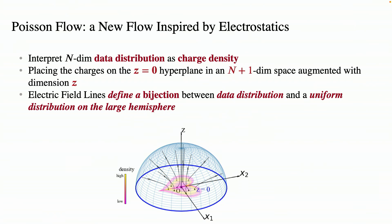So the second model, the Poisson flow model, takes the idea of electrostatics. So the basic idea is to view data samples as electric charges, then data distribution translates to charge density, and then we can just compute electric potential, electric fields based on these charge densities. And then the way we generate data samples is basically...